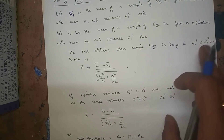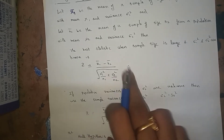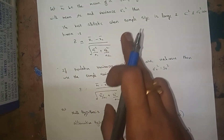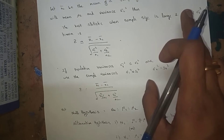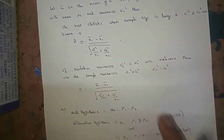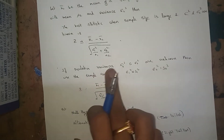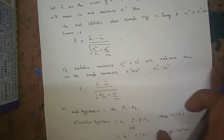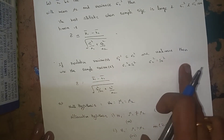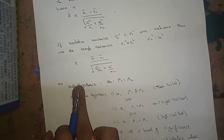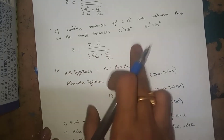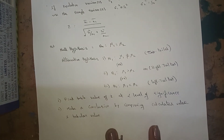The test statistic will become: if you know sigma1 square and sigma2 square (the population variances), apply the formula: Z equals x1 bar minus x2 bar, divided by the square root of sigma1 square over n1 plus sigma2 square over n2. If population variances are unknown, use sample variances: replace sigma1 square with s1 square and sigma2 square with s2 square in the same formula.